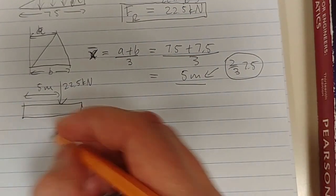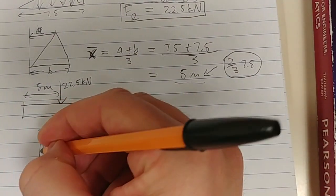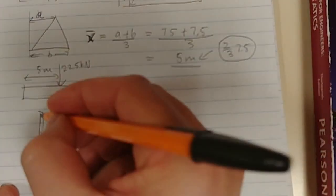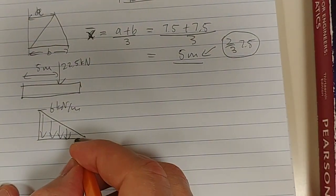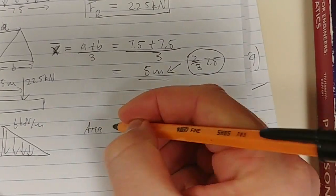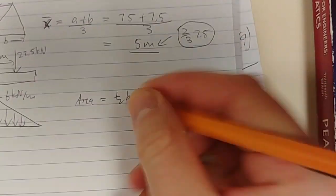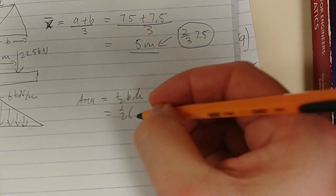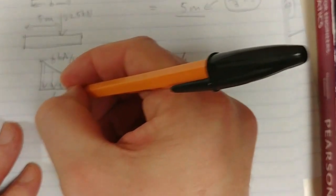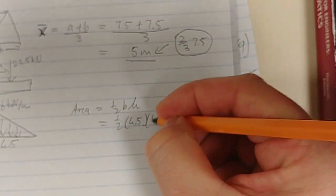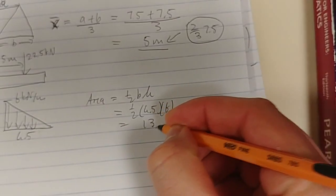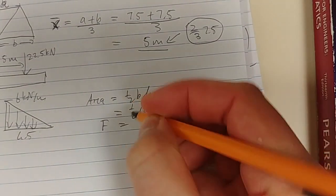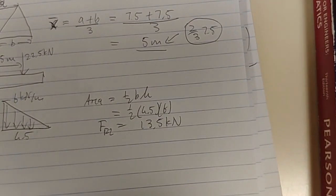Then the next problem is this distributed load on the other side, that's 6 kilonewton per meter. What is the area? It's going to be half base times height. The base is 4.5 meters, times the height of 6. The answer is 0.5 times 4.5 times 6, and that is 13.5 kilonewton. That's your FR2.